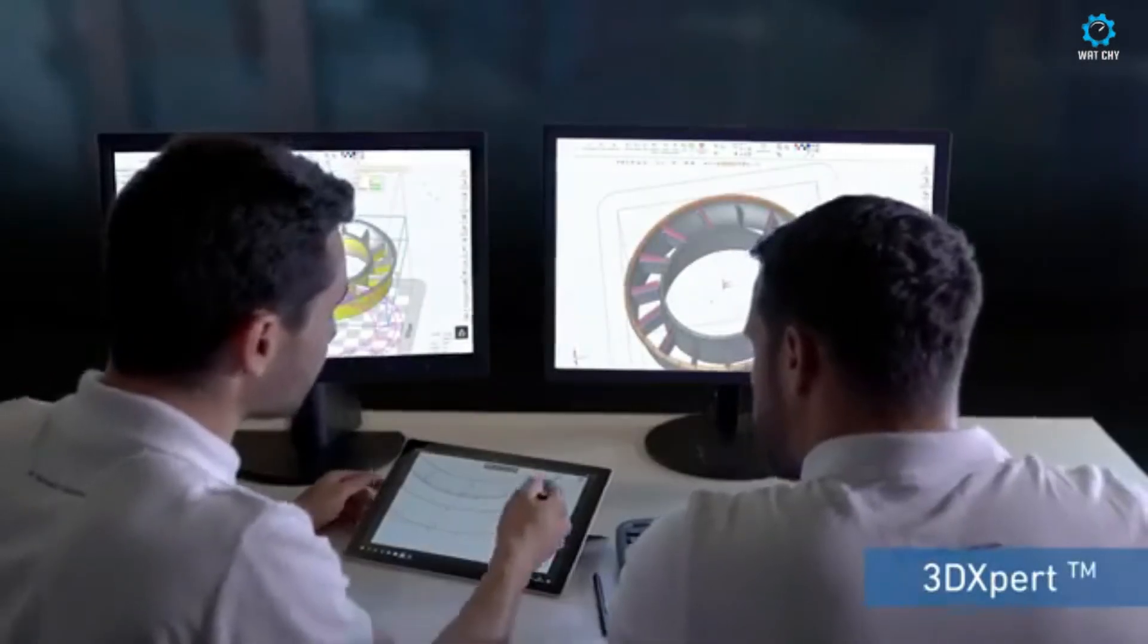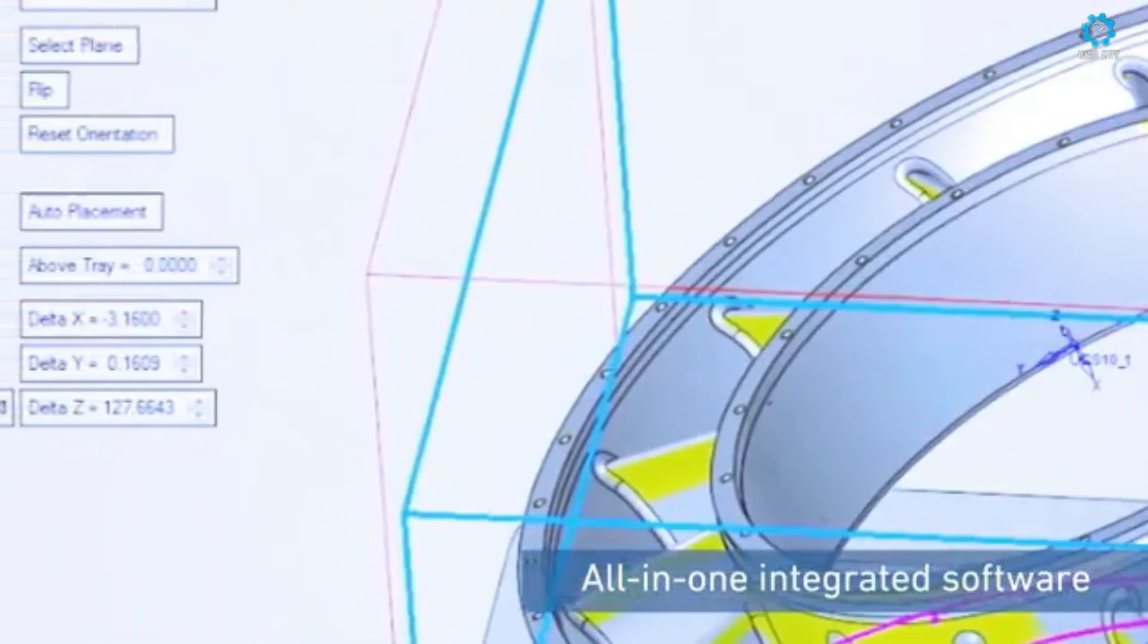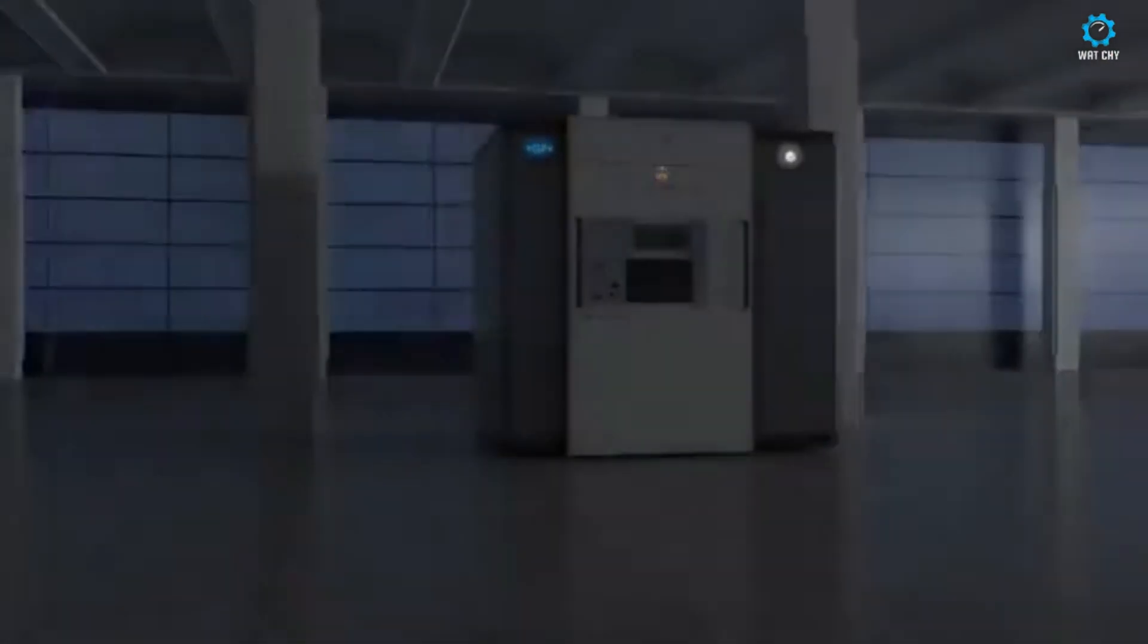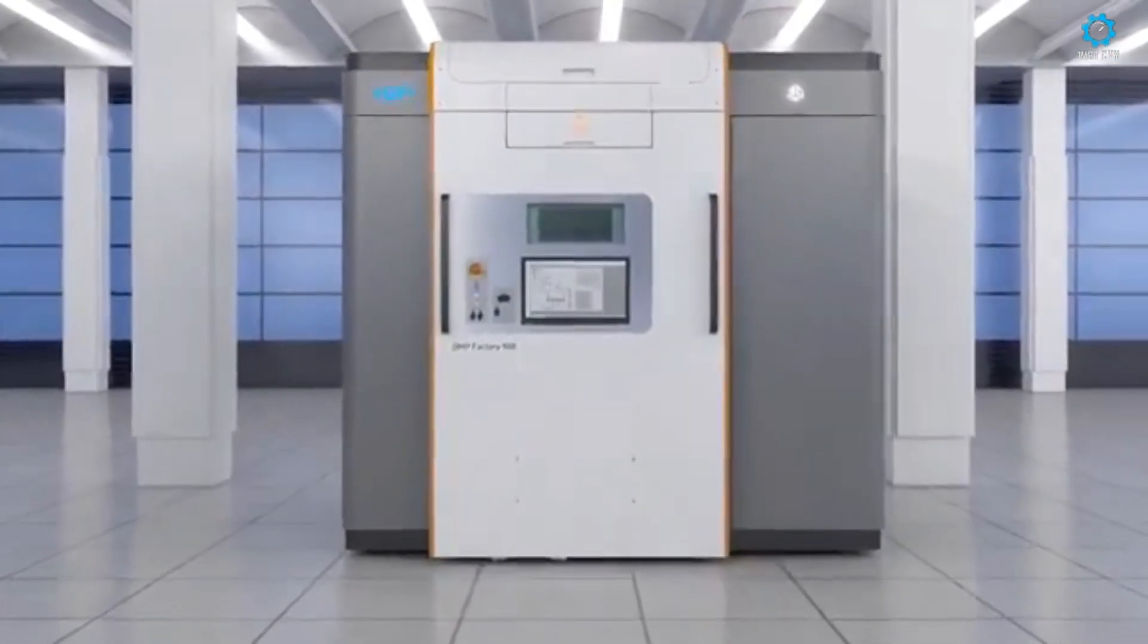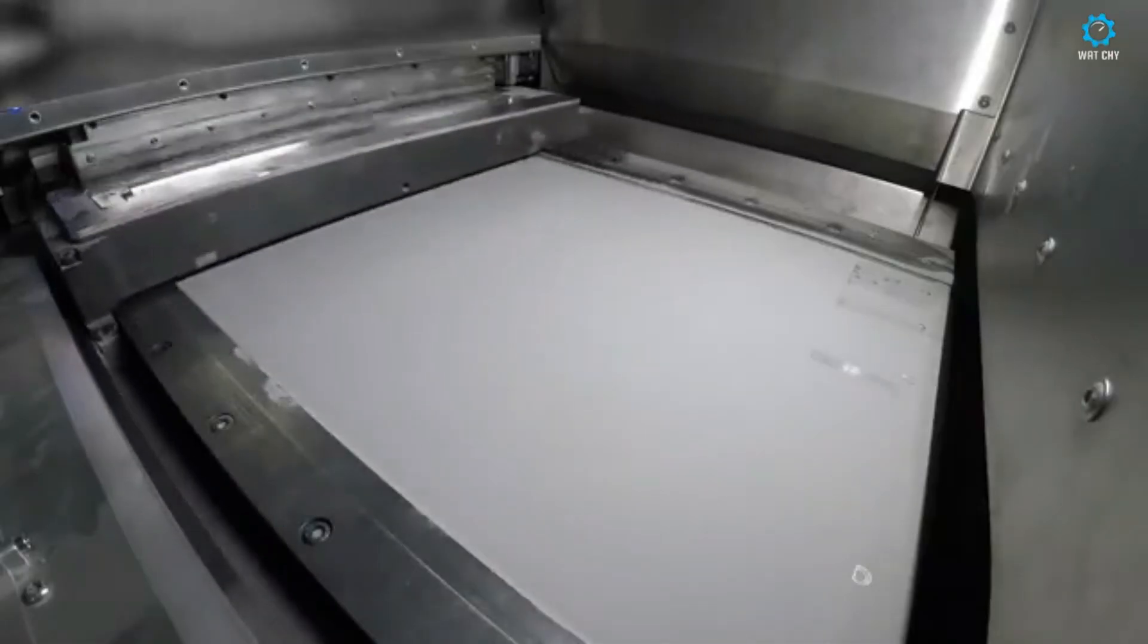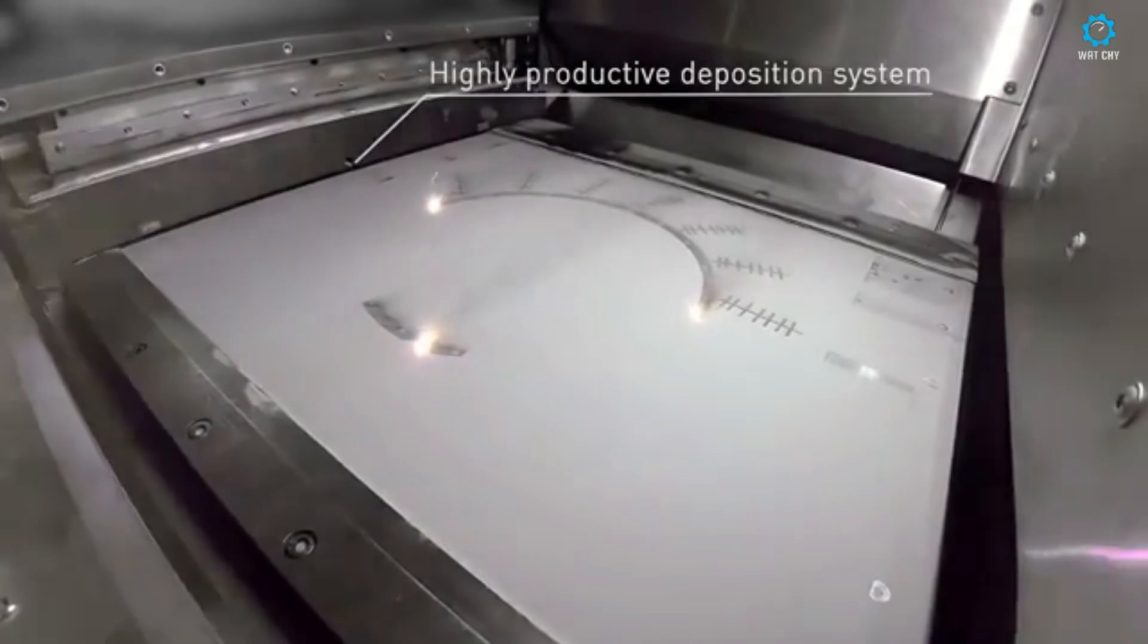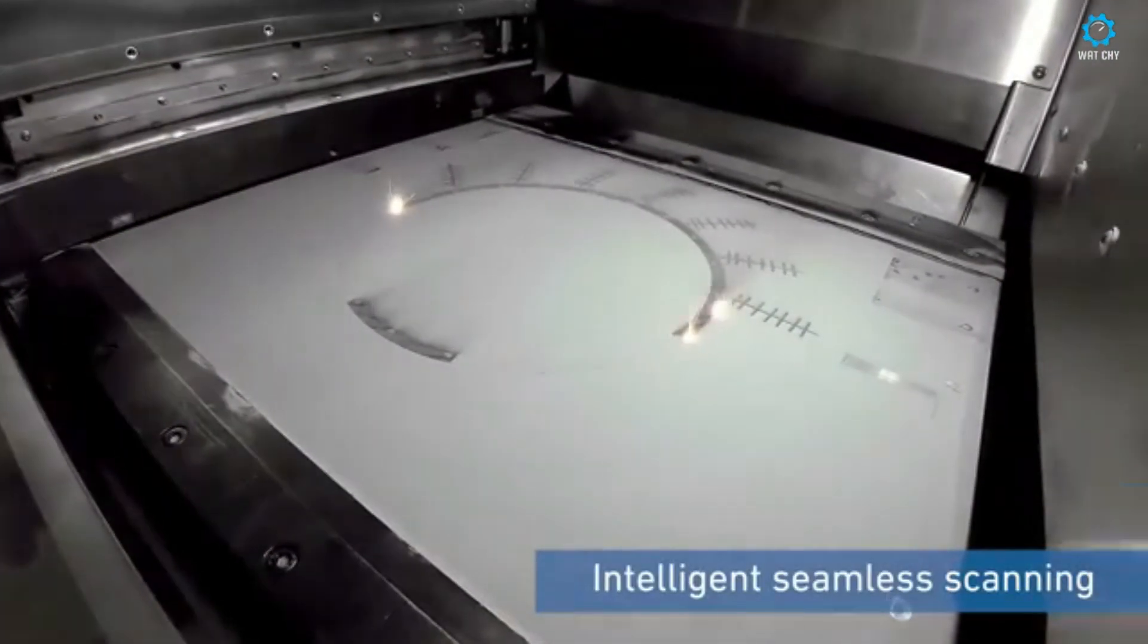The large build volume of 500x500x500mm ensures that manufacturers can print large parts or batches of smaller parts simultaneously. What sets the DMP Factory 500 apart is its focus on high precision and material versatility. It supports a variety of metal powders, including titanium, stainless steel, cobalt chrome, and inconel, making it suitable for a wide range of applications.